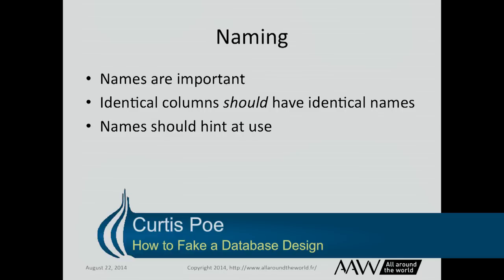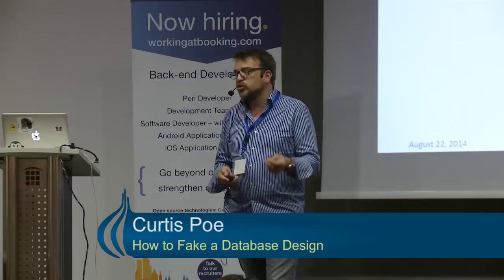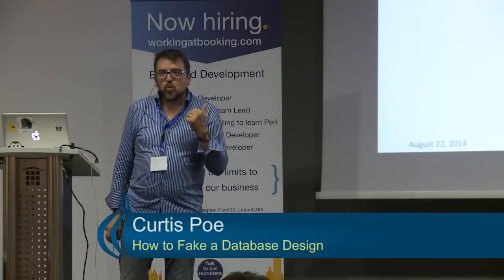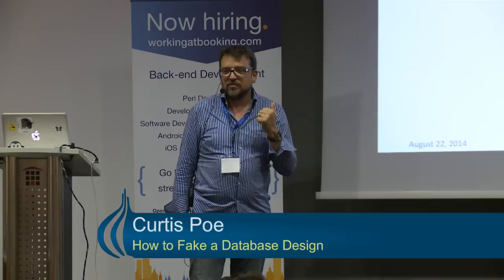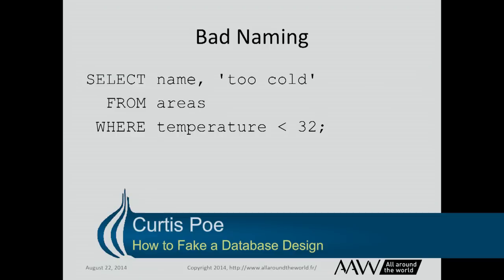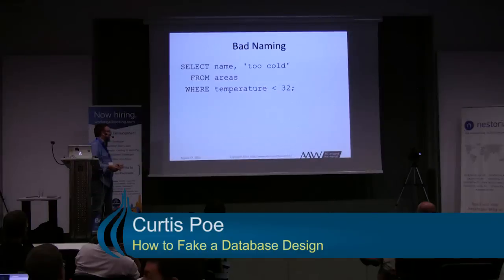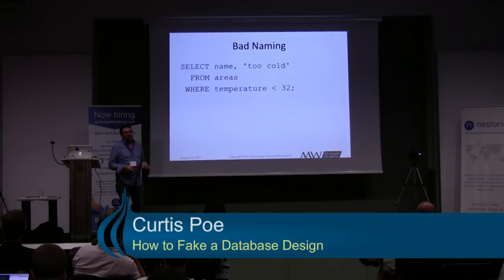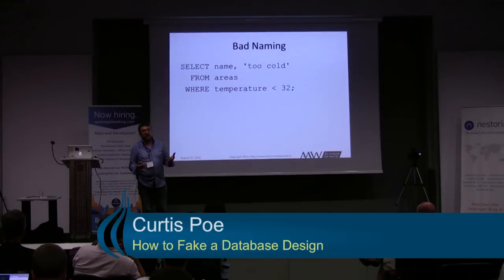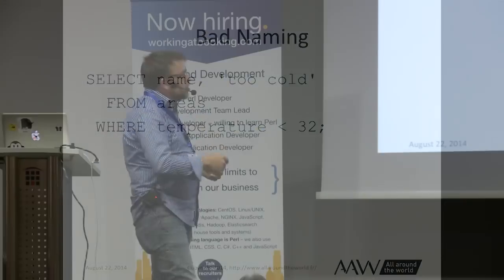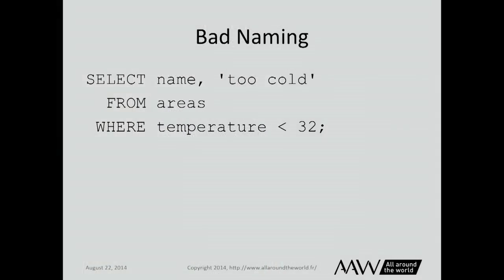Take a little more time with your database than with your code to make sure you're doing it right. A name should hint at its use. For example, a column named 'temperature' — in the United States many people would never blink at it. But if one value is Celsius and another is Fahrenheit, taking an average is meaningless. The name doesn't tell you anything. 32 degrees is not 'too cold' in Celsius, but it is in Fahrenheit.